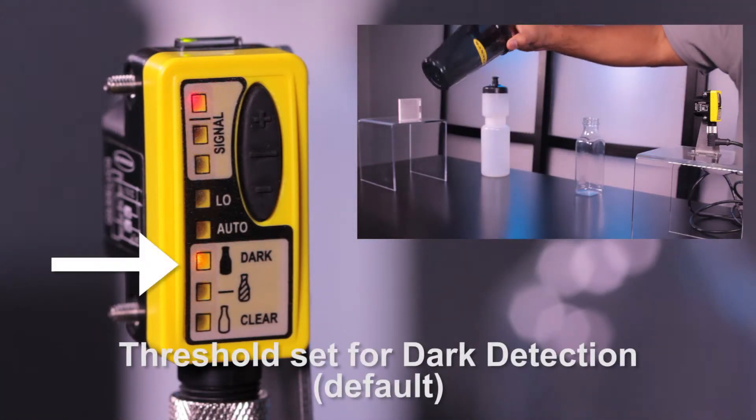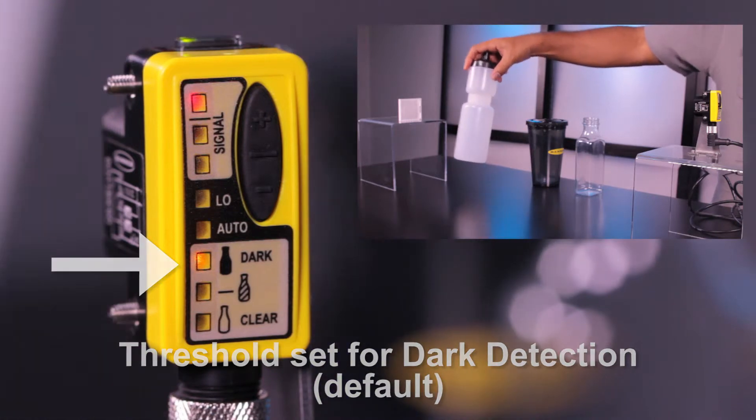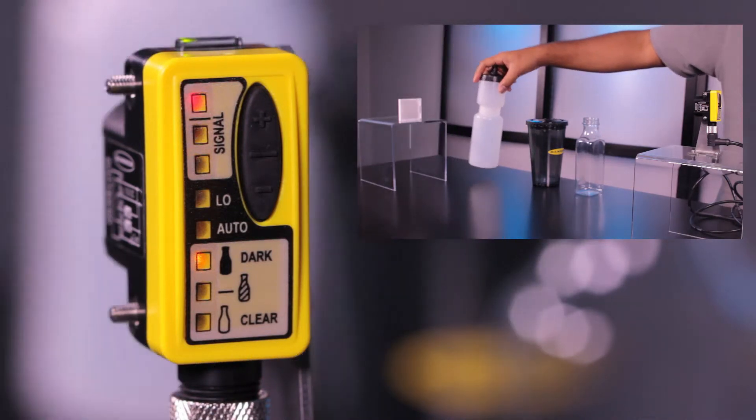The sensor automatically defaults to the dark target mode, which allows for the most variation when detecting a clear object.